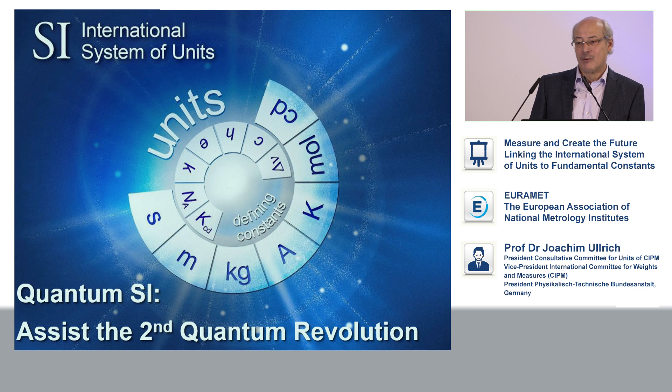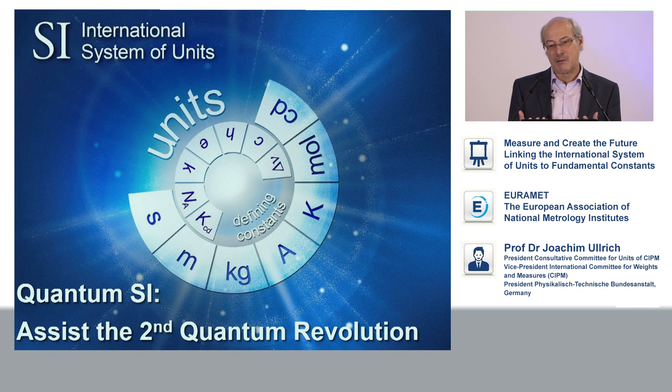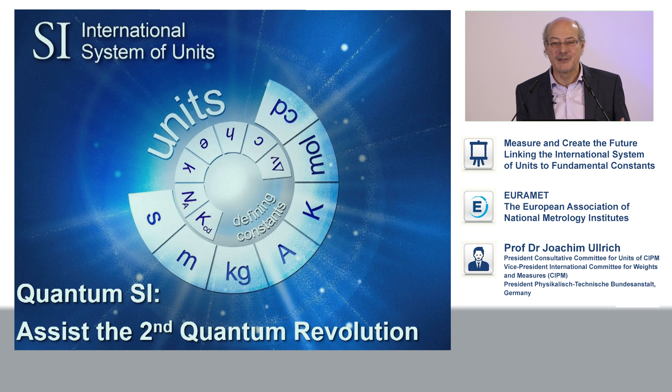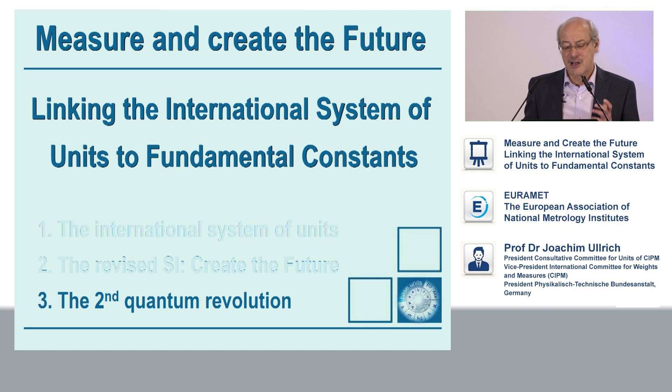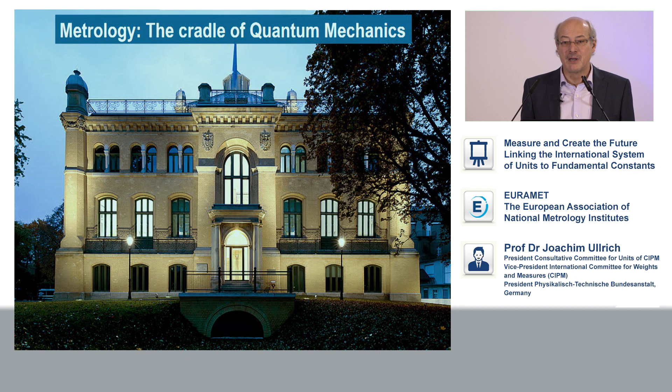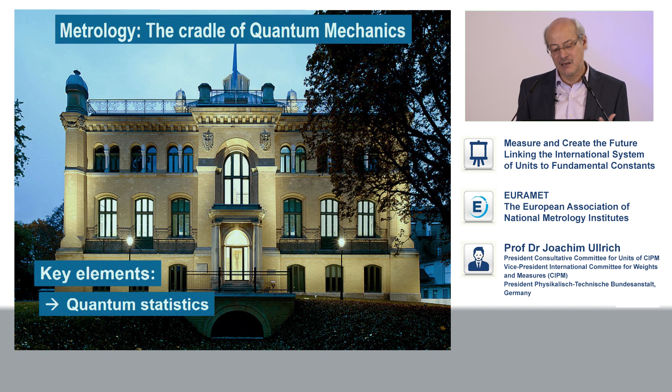The whole system, as I said, is now based on quantum properties of material — so it is sometimes also called a quantum SI. As such, it is underpinning what is sometimes called the second quantum revolution. I showed you before that metrology was the cradle of quantum mechanics. And quantum mechanics is completely different from classical mechanics.